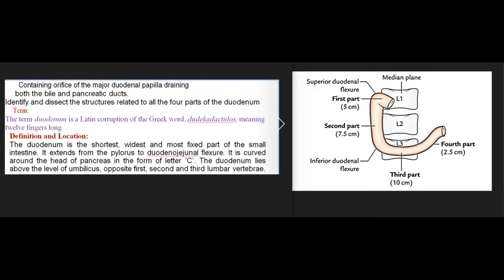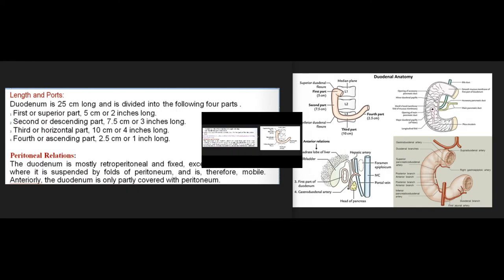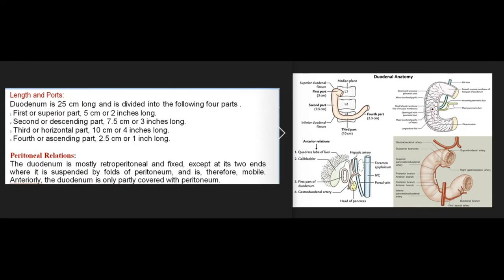The duodenum lies above the level of the umbilicus, opposite the first, second, and third lumbar vertebrae. It is 25 centimeters long and divided into four parts: the first or superior part (5 cm), the second or descending part (7.5 cm), the third or horizontal part (10 cm), and the fourth or ascending part (2.5 cm). The duodenum is mostly retroperitoneal and fixed except at its two ends, where it is suspended by folds of peritoneum and is therefore mobile.